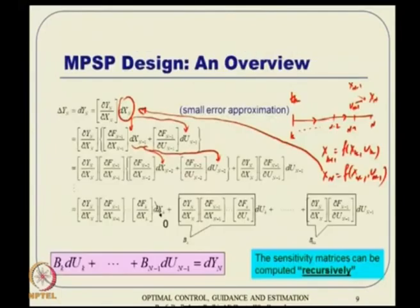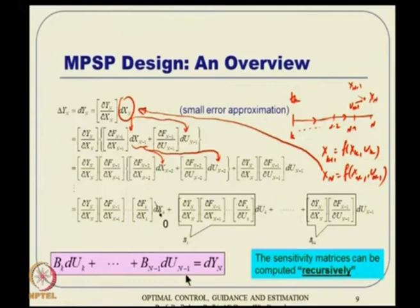The constraint equation is a small-dimensional algebraic constraint. However, the number of free variables depends on the dimension of the control variable multiplied by the number of time steps, so there are many degrees of freedom. We have far more freedom than constraints — it is a severely underdetermined system. When you have an underdetermined system, there is scope for optimization, and this leads us to the static optimization idea.